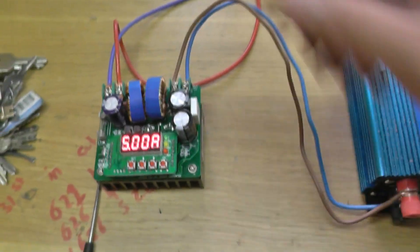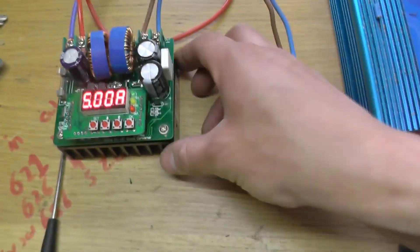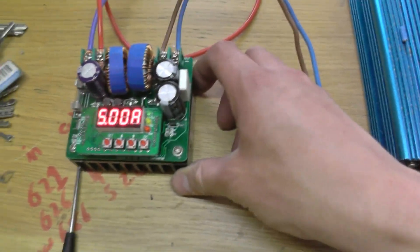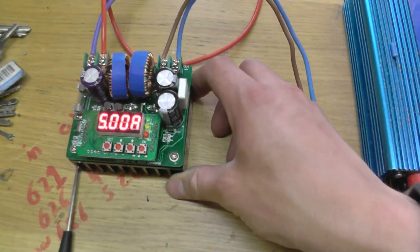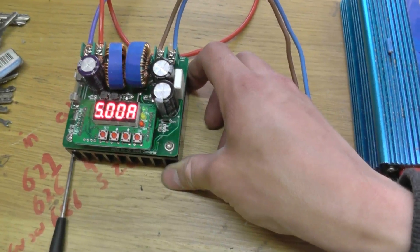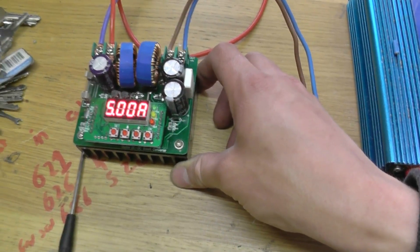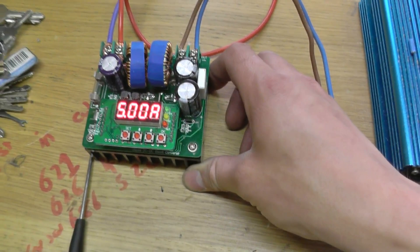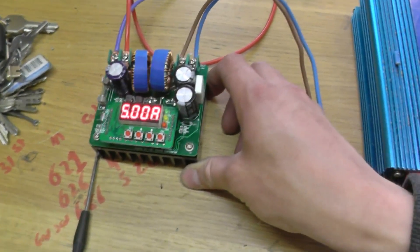So what we have here is a driver unit. Julian's done a good review of it. It's a 600 watt driver, drive big LEDs and stuff with it.